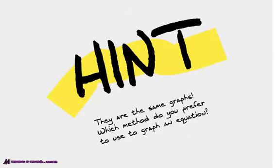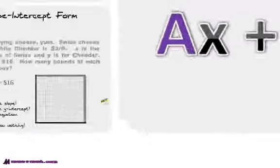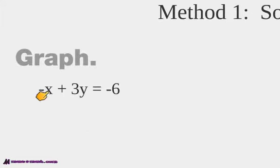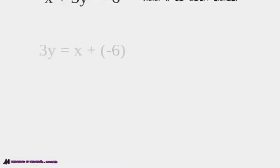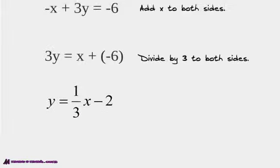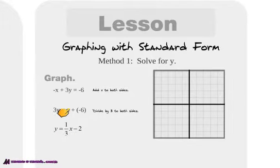Notice they are the same graphs. Which method would you prefer to use to graph the equation — plug it into the table or use y equals mx plus b? Well, there are a couple different ways. We're going to definitely solve for y — that's one way to graph with the standard form. Here is our standard form: notice our A is negative 1, our B is 3, and our C is negative 6. The first thing we're going to do is solve for y: add x to both sides to get 3y equals x plus negative 6.